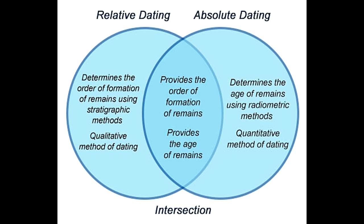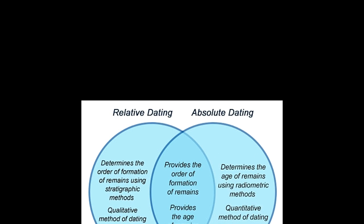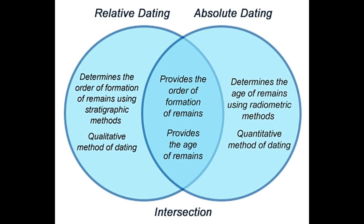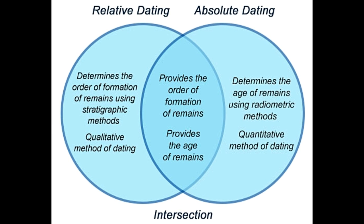Biostratigraphy — an extended version of stratigraphy where the faunal deposits are used to establish dating. Faunal deposits include remains and fossils of dead animals. Cross dating — this method compares the age of remains or fossils found in a layer with the ones found in other layers. The comparison helps establish the relative age of these remains. Fluorine dating — bones from fossils absorb fluorine from the ground water. The amount of fluorine absorbed indicates how long the fossil has been buried in the sediments.